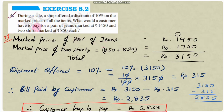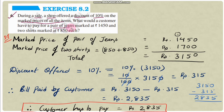Question number 6: During a sale, a shop offered a discount of 10% on the market price of all items. What would a customer have to pay for a pair of jeans marked at 1450 rupees and 2 shirts marked at 850 rupees each? The shop offers 10% discount on all items.